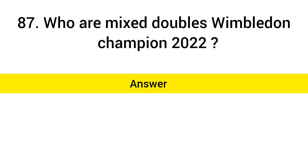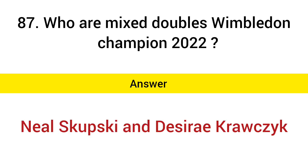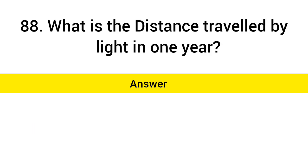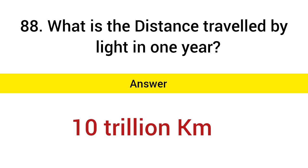Who are the mixed doubles Wimbledon Champions 2022? Answer: Neal Skupski and Desirae Krawczyk. What is the distance travelled by light in one year? Answer: 10 trillion km.